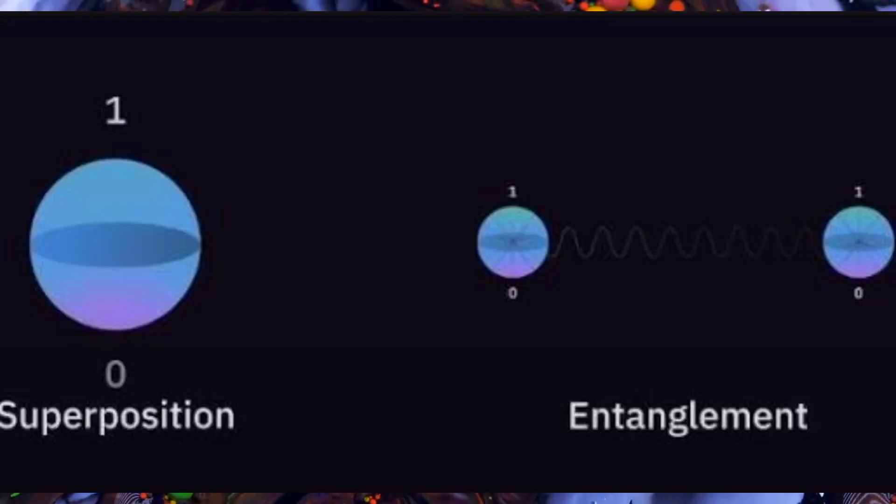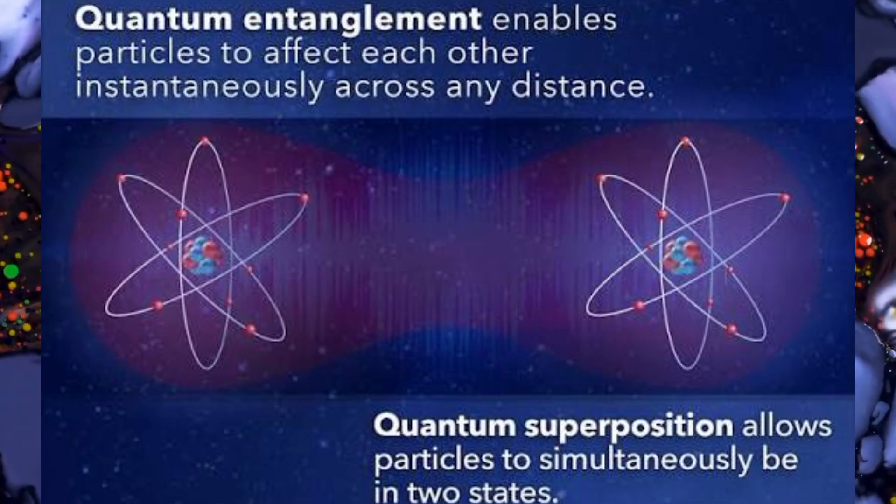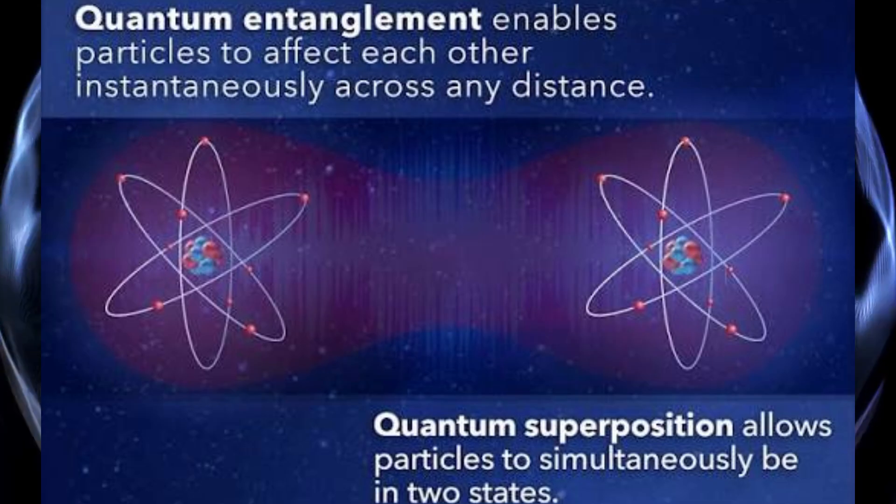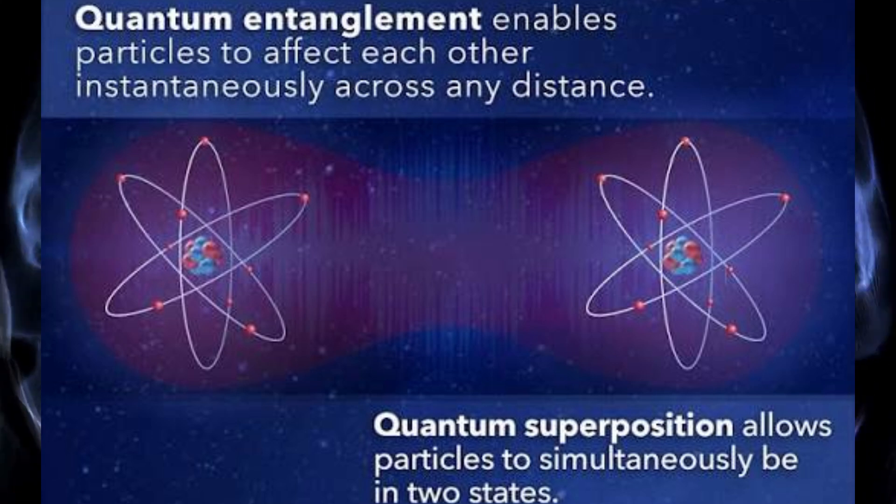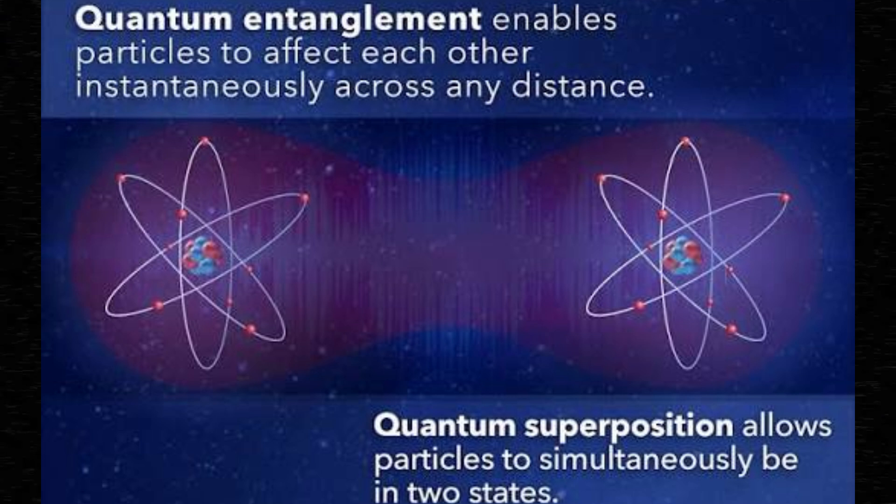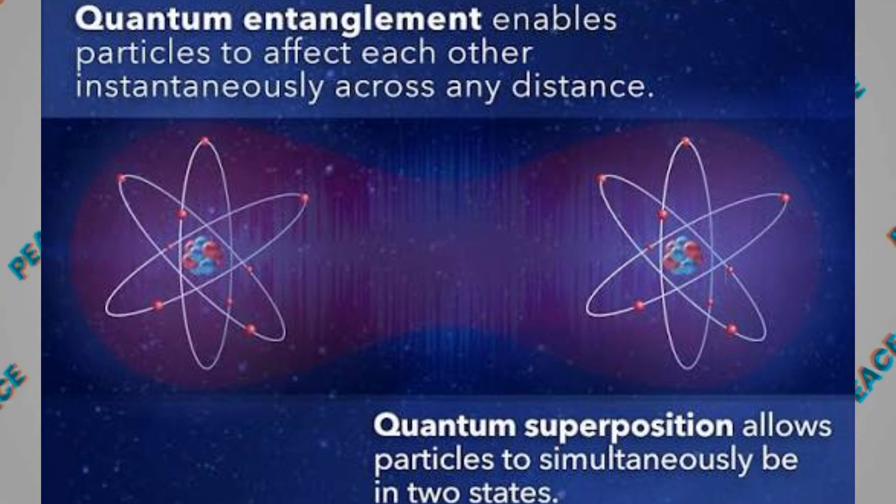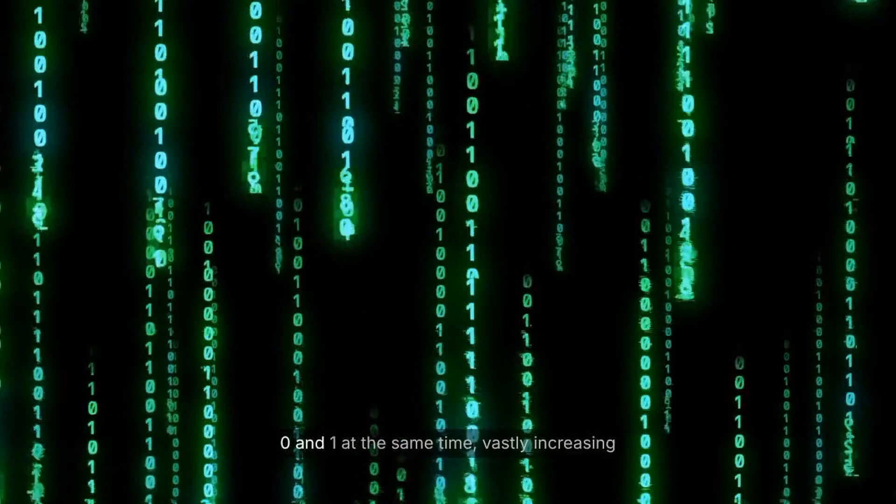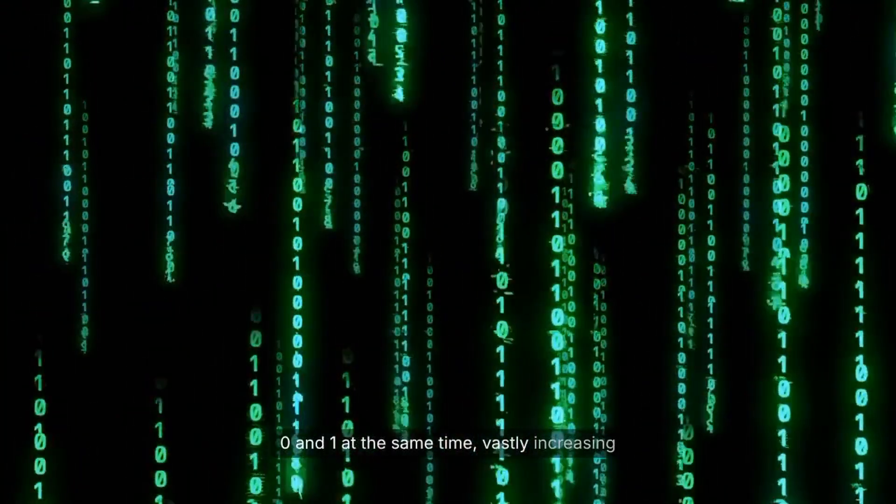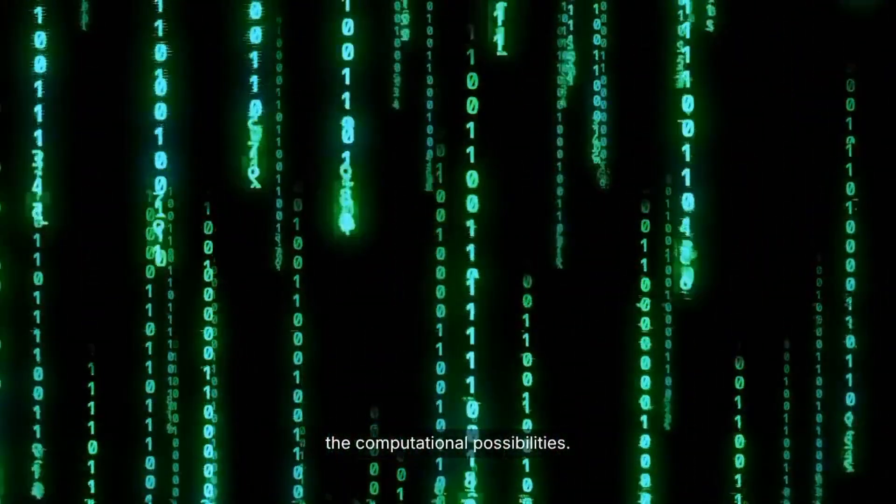Quantum computing is built upon two remarkable phenomena: superposition and entanglement. Superposition allows quantum bits, or qubits, to exist in multiple states simultaneously, rather than just a single binary value like classical bits. This means a qubit can represent both zero and one at the same time, vastly increasing the computational possibilities.